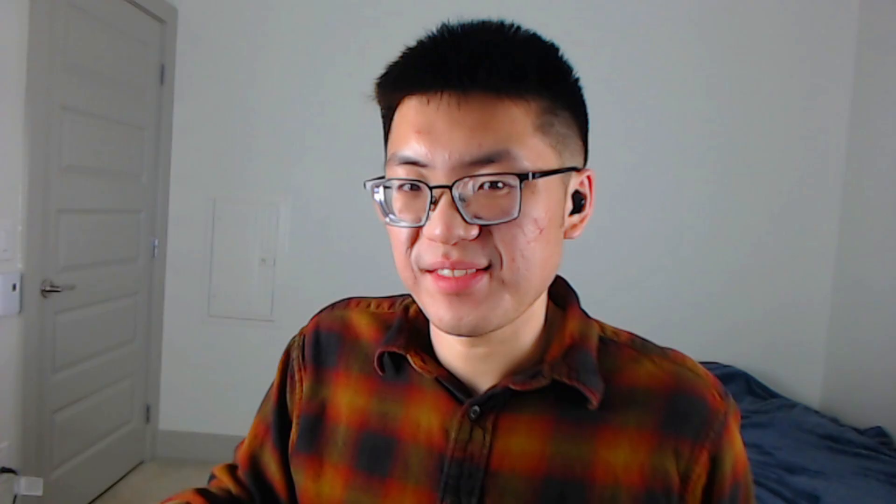We have a high-level idea of the Solana architecture and how leader selection works. Now we're going to the most important part: the proof of history algorithm that Solana is known for. We know the leader generates transactions, which are actually hashes, using proof of history. But what is proof of history? Before we talk about how it works, let's talk about what it is and what it's trying to solve. Proof of history is essentially an algorithm that creates a time ordering to allow validator nodes to determine the order of incoming blocks that the leader generates.